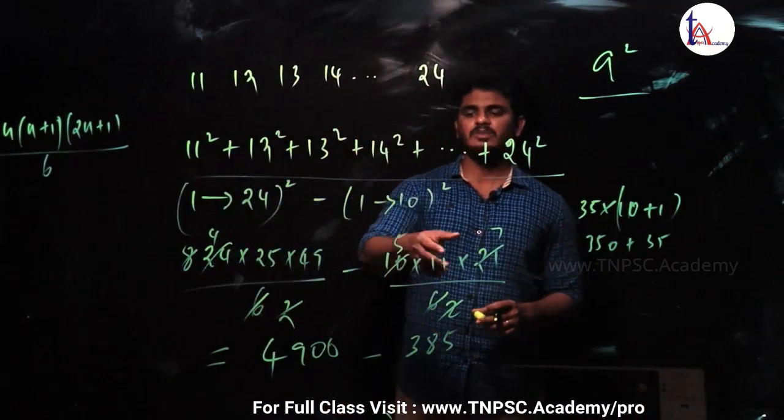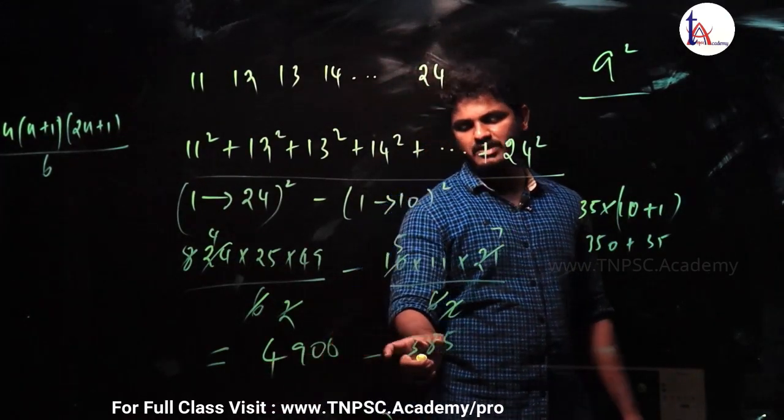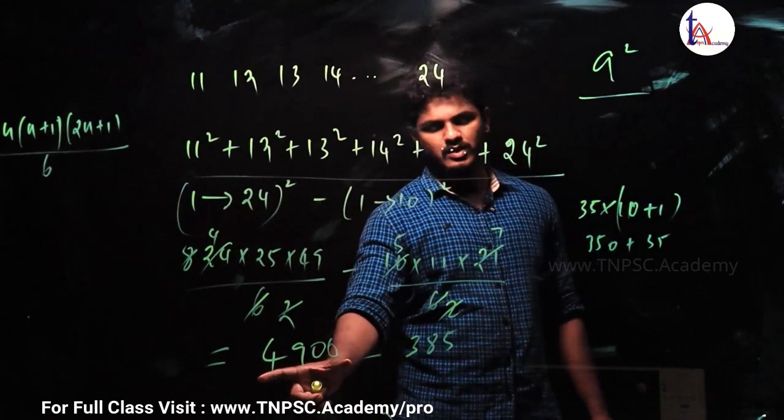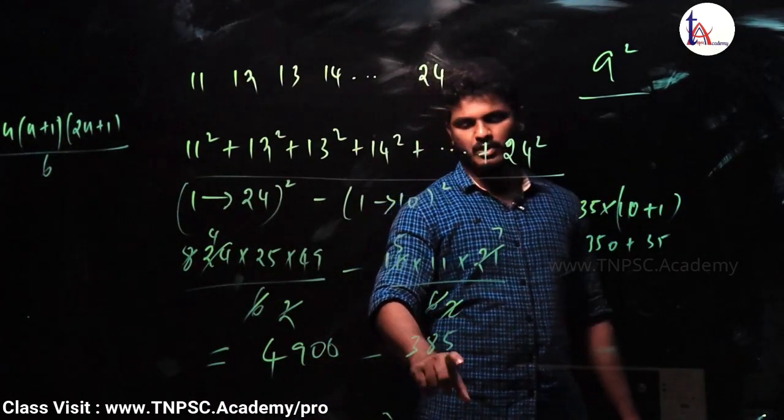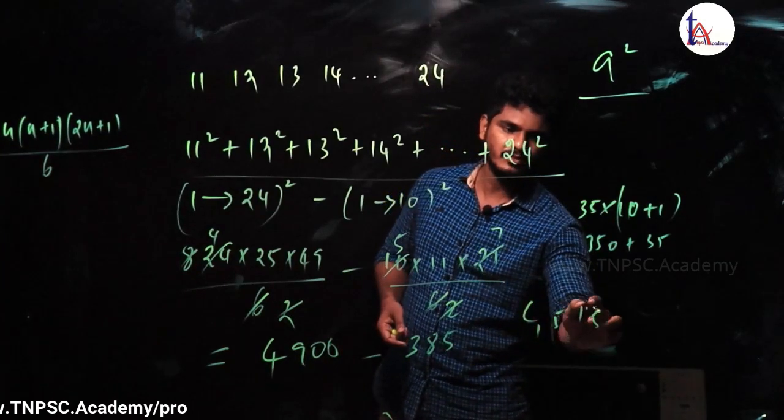Okay, right? So now, in 4900, we subtract 385. So in 4900, we subtract 400. In 4900, we subtract 400, 4500. So if we subtract 15 into 15, we subtract 15. So if we add that 15, we add 45, 1, 5. Are you okay?